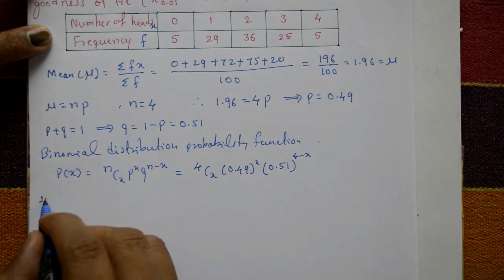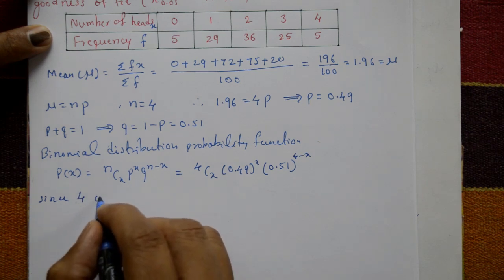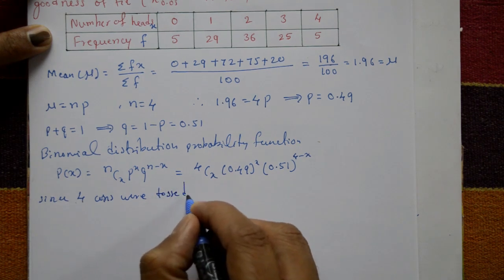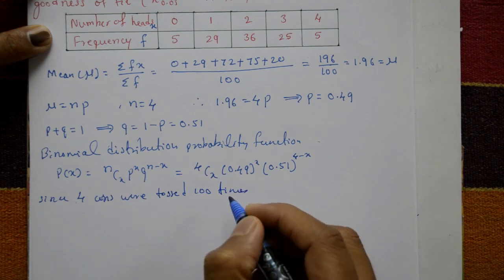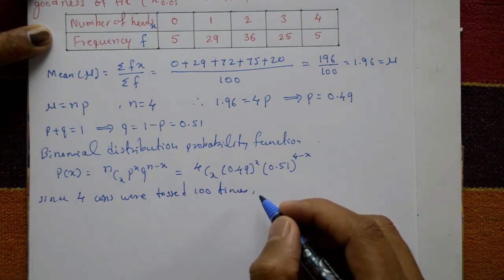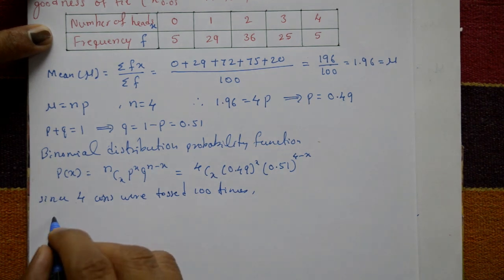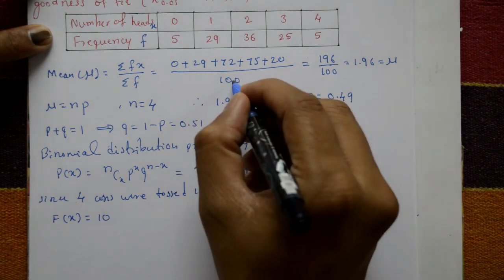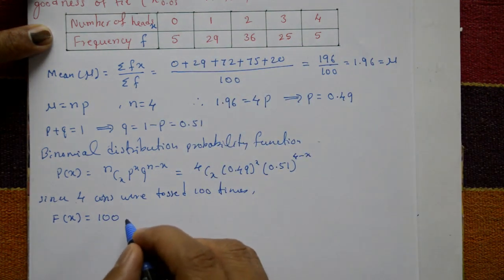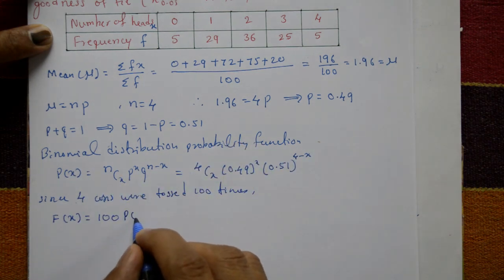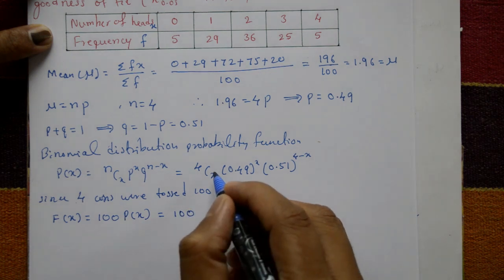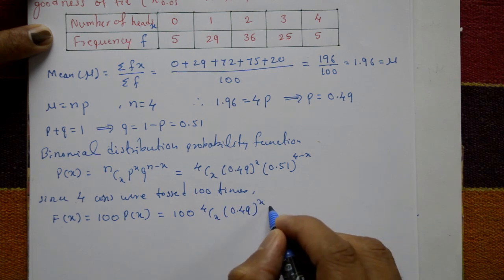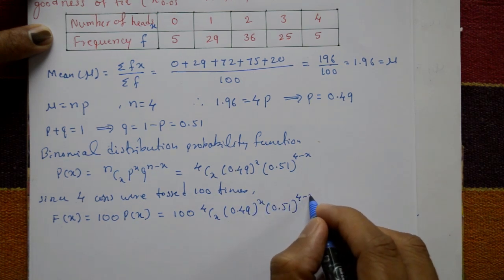Since four coins were tossed 100 times, we find the expected frequencies. F(x) equals 100 times P(x), which is 100 times 4Cx times 0.49 raised to x times 0.51 raised to 4 minus x. Now substitute x equals 0, 1, 2, 3, and 4 to get each expected frequency.